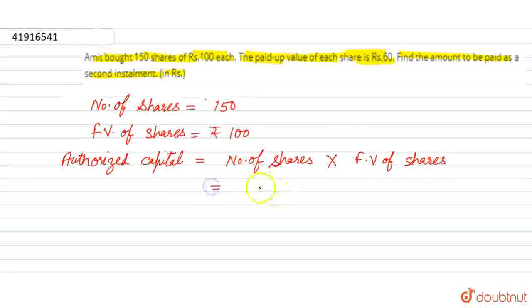If we multiply these two, we'll get the capital that was invested in buying the shares. That is equal to 15,000 rupees. So he bought 150 shares at 100 rupees each, so total he invested 15,000 rupees.